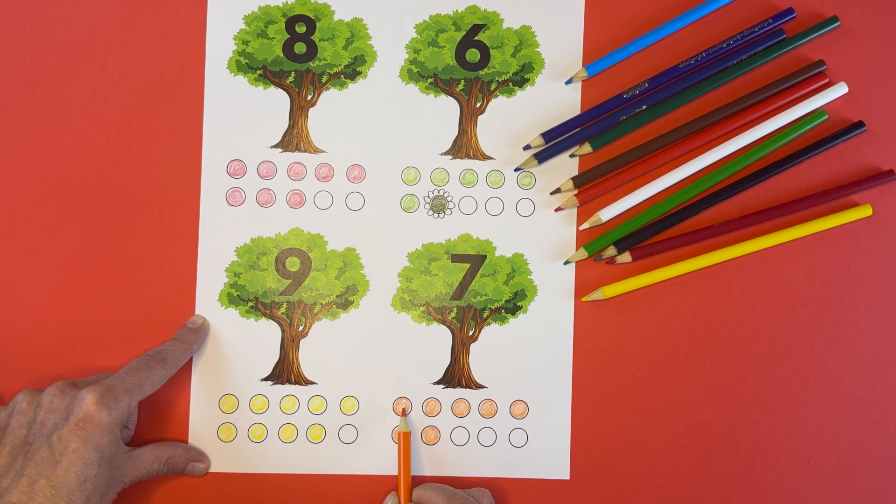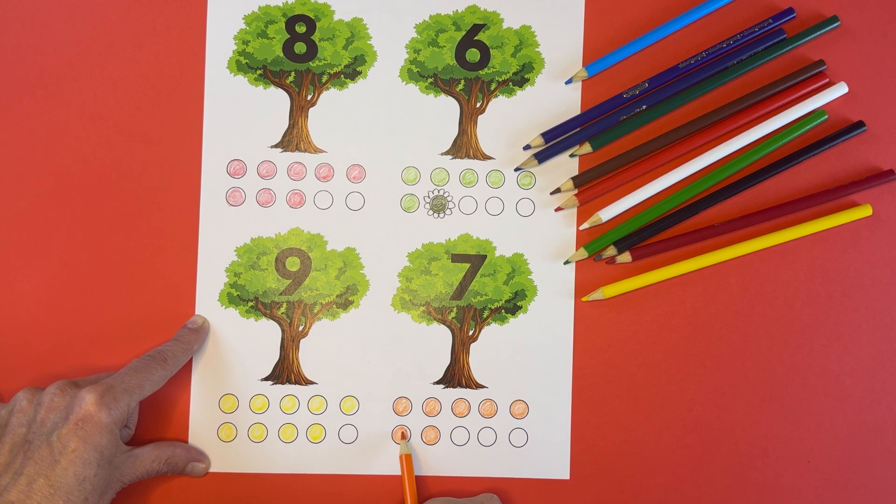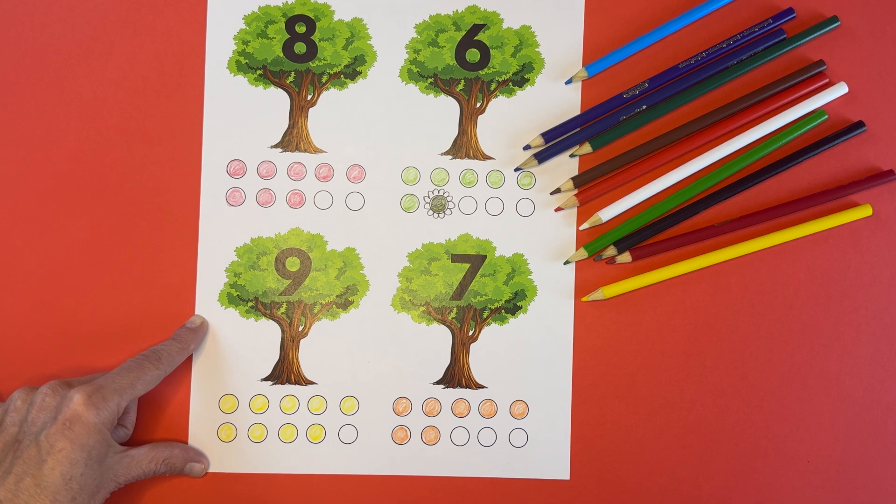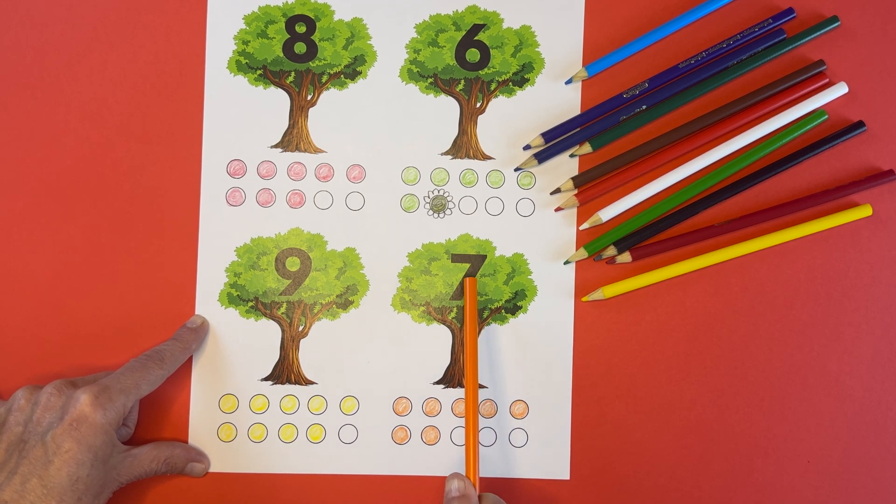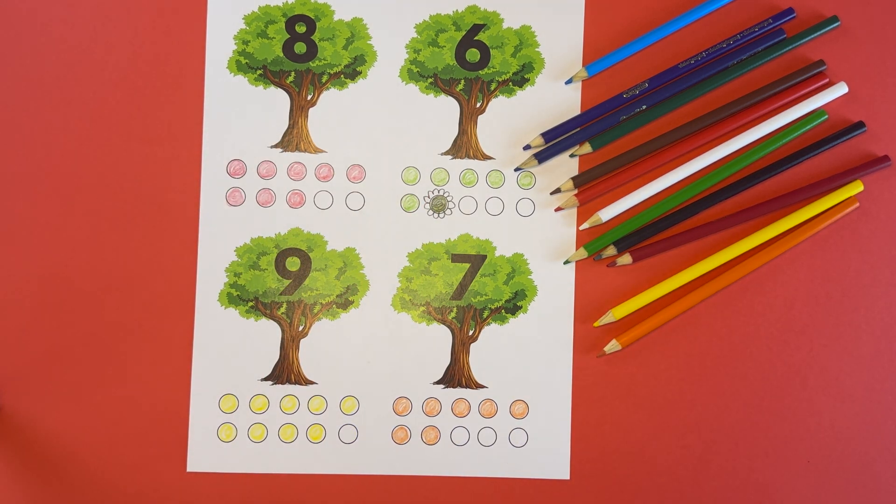Let's count and make sure we have seven. One, two, three, four, five, six, and seven. Seven orange apples. That's silly, huh? Under the seven apple tree. Well done. Thank you for helping me.